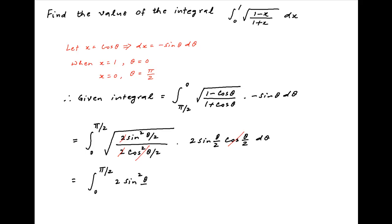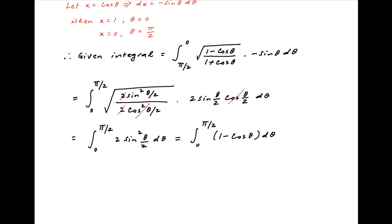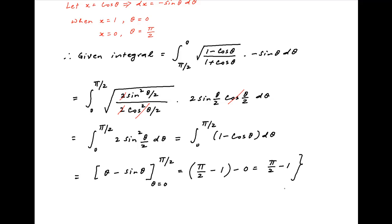This can be written as the integral from 0 to π/2 of (1 - cos θ) dθ. The value of the integral is θ - sin θ, evaluated from 0 to π/2. This equals π/2 - 1, which is the required answer.